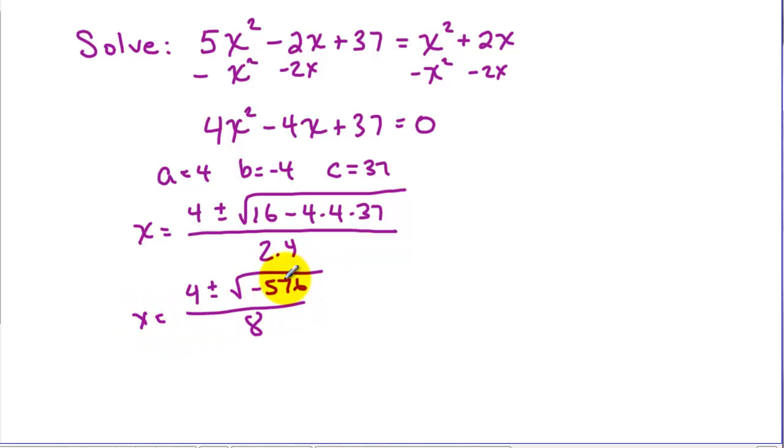And when we calculate that, we get square root of negative 576 over 8. And that happens to be 24 squared. So we get 4 plus or minus. Now 24 squared, but it's minus, so we get 24i.